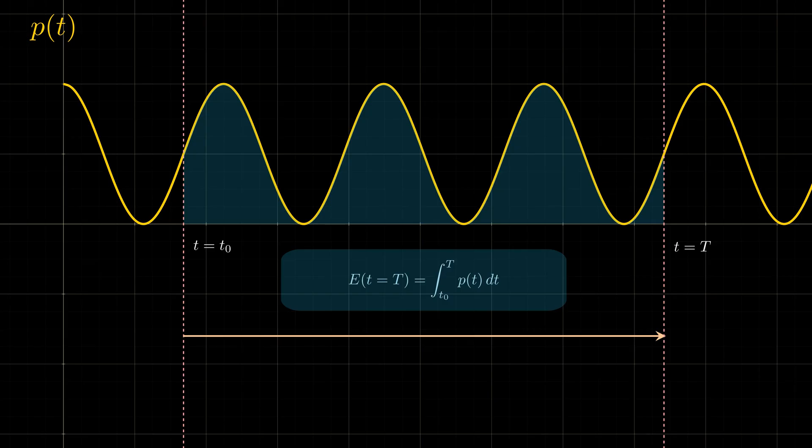If we multiply and divide this integral by the period of measurement, we can identify this part here, which is the definition of average power. So energy absorbed by the resistor between T0 and T is the period of time times the average power.